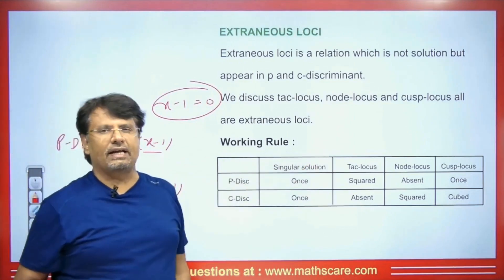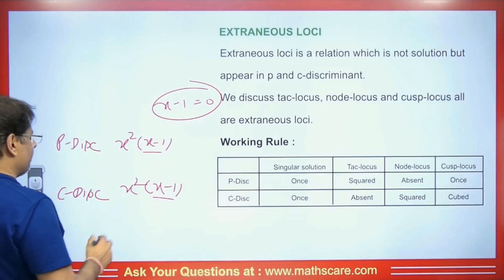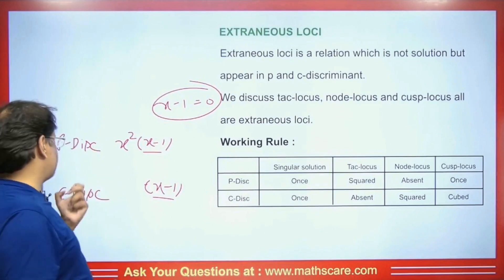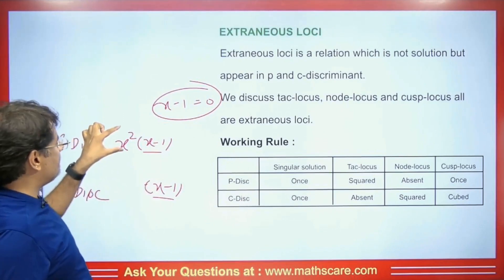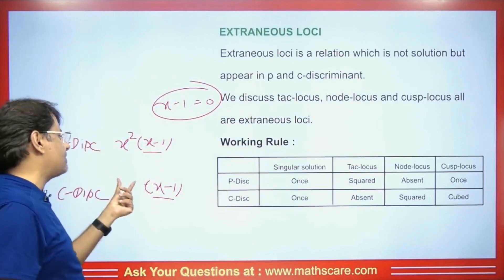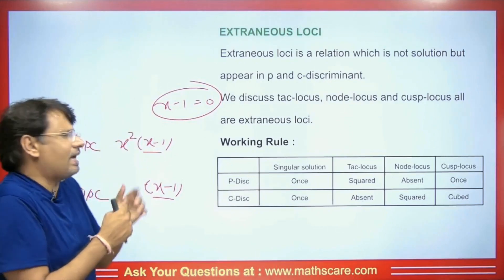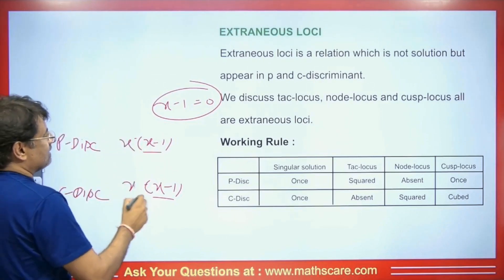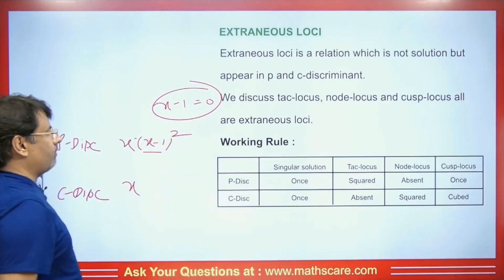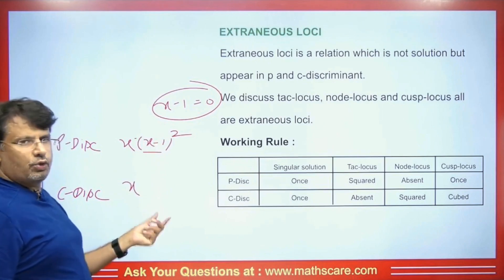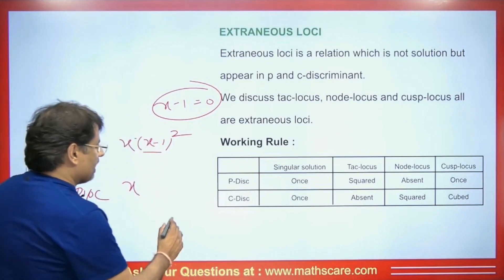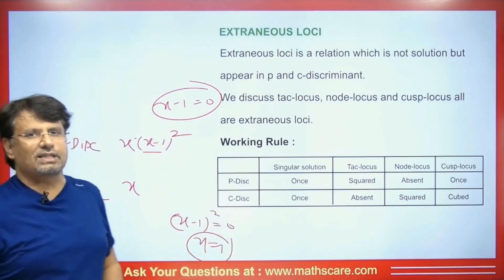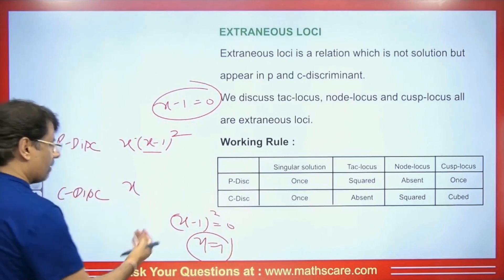Now let's talk about what exactly is the tack locus. Suppose we get the P discriminant as x · (x−1)² and the C discriminant as just x. There is a square term in the P discriminant but not in the C discriminant. In that case, (x−1)² = 0, giving x = 1, will be the tack locus. Similarly, if P discriminant is x² · (x−1) and C discriminant is (x−1), the square term x² is absent in C discriminant, so x² = 0 gives x = 0 as tack locus as well.